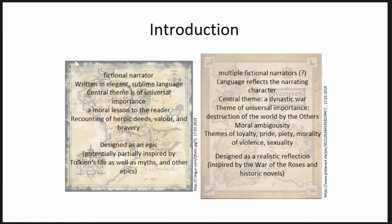First, spoiler warning: Game of Thrones potentially has multiple fictional narrators — we still don't know. The language of every chapter reflects the narrating character, so it's usually not an elegant, sublime language; it depends on how educated the person is. The central theme is probably the dynastic war, but the more universally important theme would be the destruction of the world by the Others or the White Walkers. We have a lot of moral ambiguity, themes of loyalty, pride, piety, and also violence and sexuality, which are not explored in the Lord of the Rings because they are not part of epic storytelling.